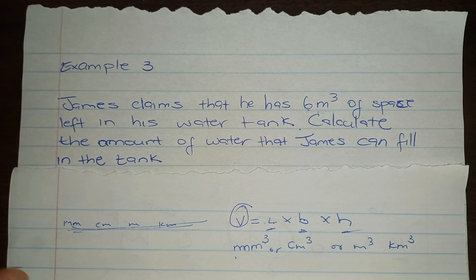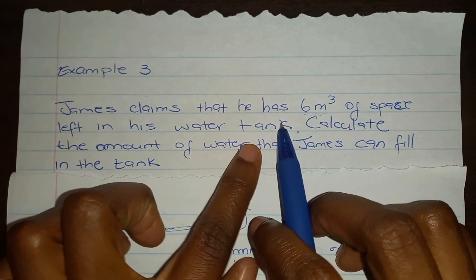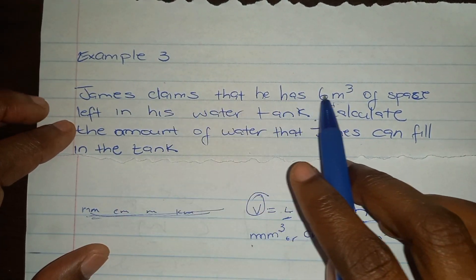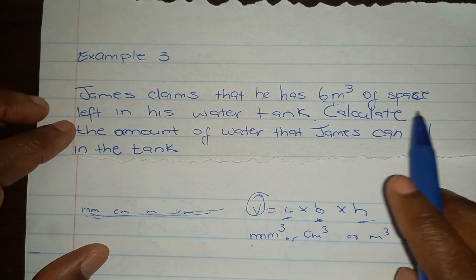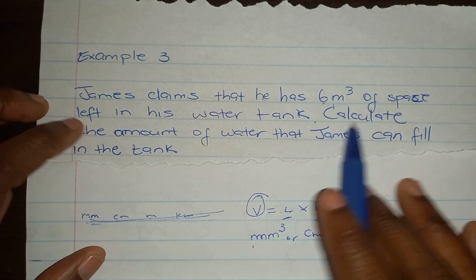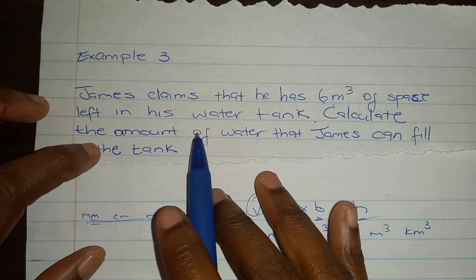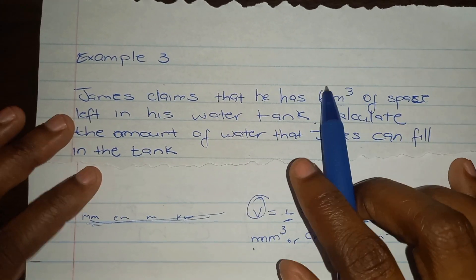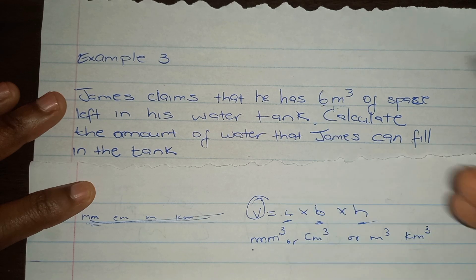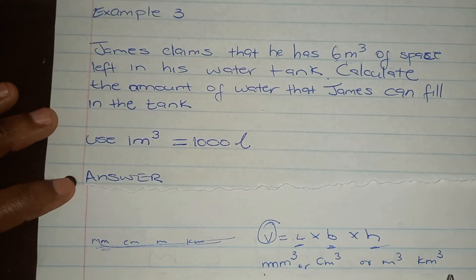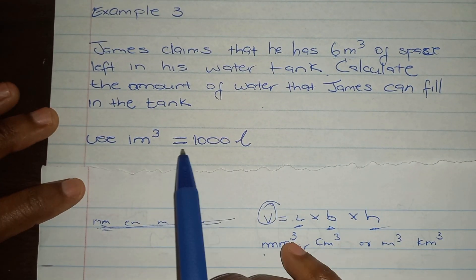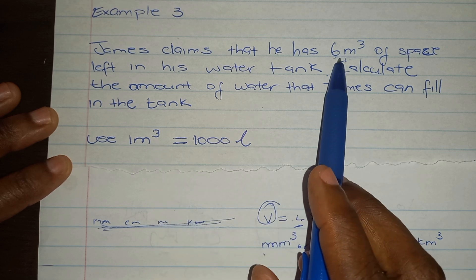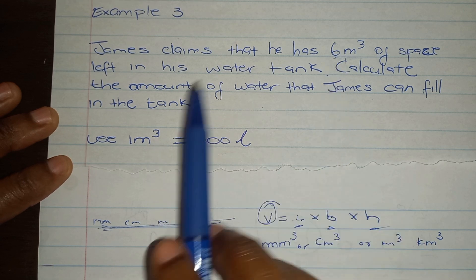Now, the question says James claims he has six cubic meters of space left in his water tank — calculate the amount of water that James can fill in the tank. We need to recognize this is actually volume, and therefore we can change it to liters. This one is nice because we already have the volume — we don't have to calculate it.